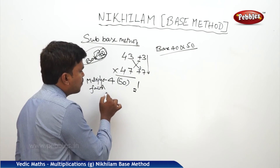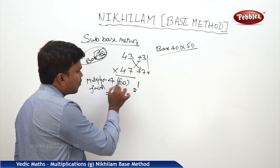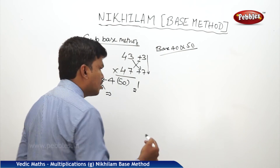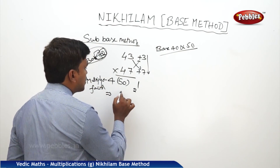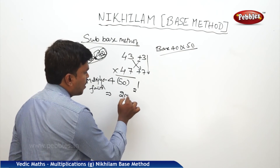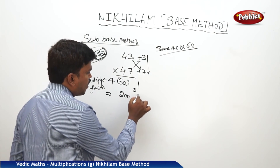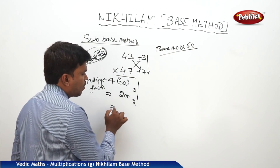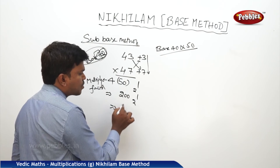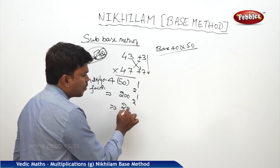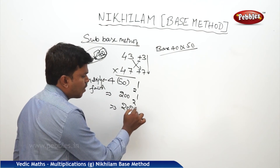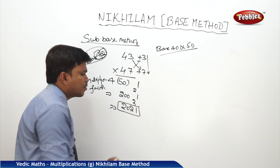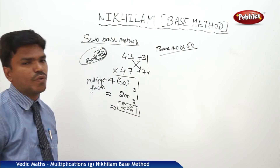For that 50, multiply by the multiplication factor — the digit in the tens place of the base 40, which is 4. So 4 into 50 is 200. We have carry 2, so 200 plus 2 is 202, and the right side digit is 1. So the answer is 2021.